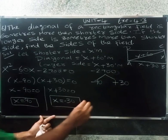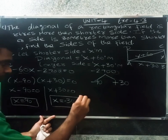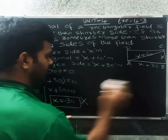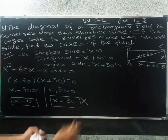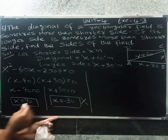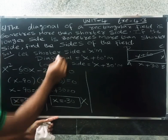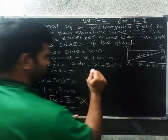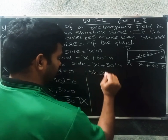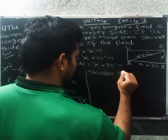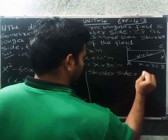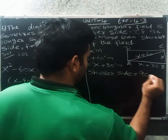Since the sides of the field cannot be negative, we reject x equals minus 30. Therefore x equals 90. So the shorter side equals 90 meters, the longer side equals x plus 30 equals 120 meters, and the diagonal equals x plus 60 equals 150 meters.